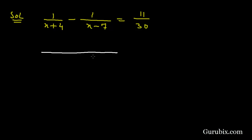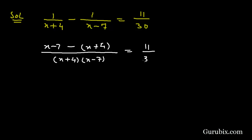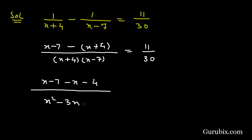Here we shall take the LCM of the left hand side, which gives (x plus 4) into (x minus 7). Dividing the LCM by (x plus 4) gives (x minus 7), and we multiply it by 1. So the numerator becomes (x minus 7) minus (x plus 4), over (x squared minus 3x minus 28), which equals 11 over 30.